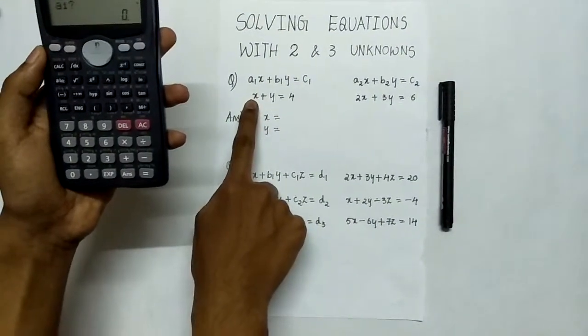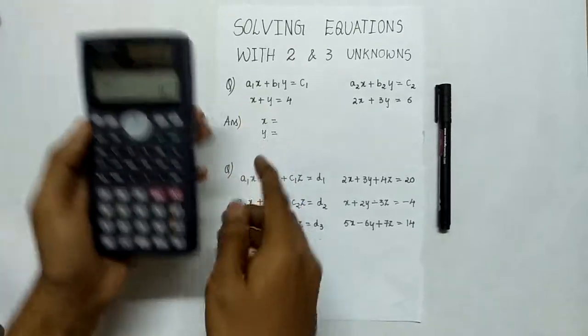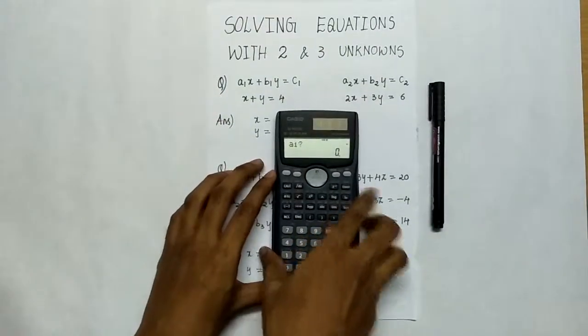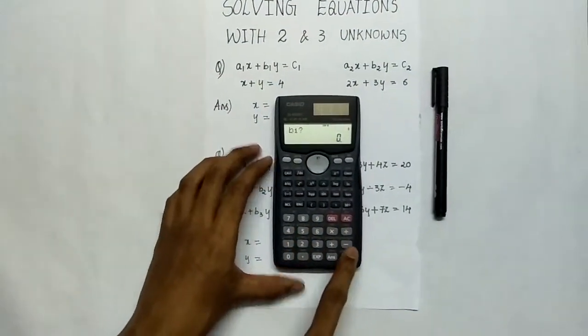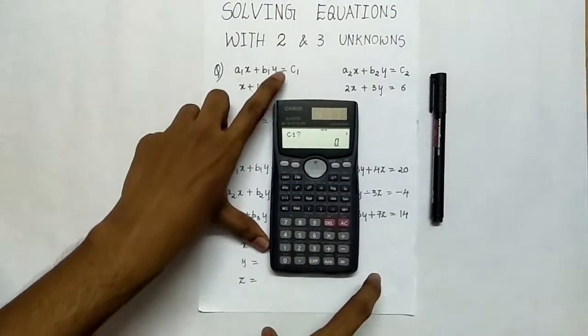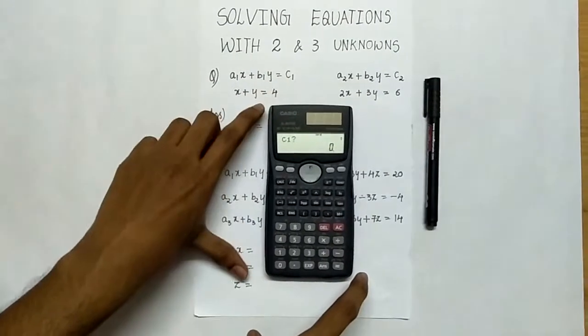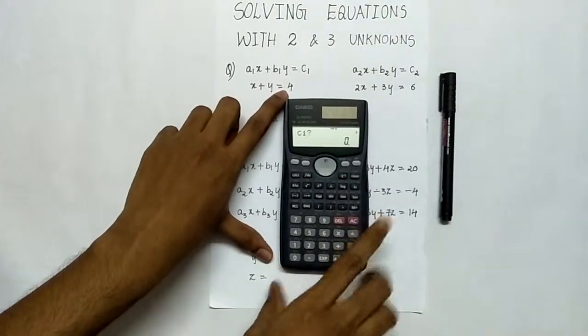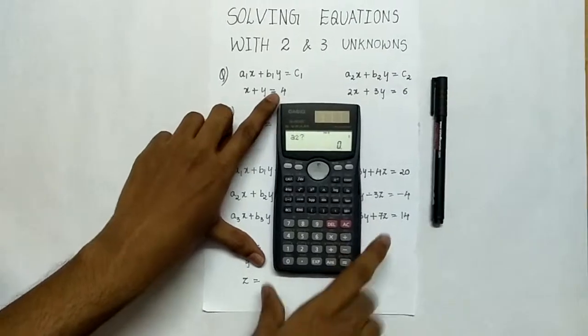a1 is the coefficient of x. Here we have a1 as 1, so now let us press 1 equal to. b1 is coefficient of y, that is also 1, press equal to. c1 is the constant we have on the right hand side of equal to, press 4 equal to.